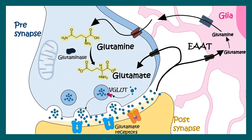Inside the glia, glutamate gets converted to glutamine again with the help of the enzyme glutamine synthetase. That glutamine is again supplied back to the presynaptic terminal for further glutamate biosynthesis. Alternatively, a small proportion of glutamate is directly taken up into the synaptic terminal as well. This complicated stepwise procedure is known as the glutamate cycle, and that's what keeps our excitatory synapses going.